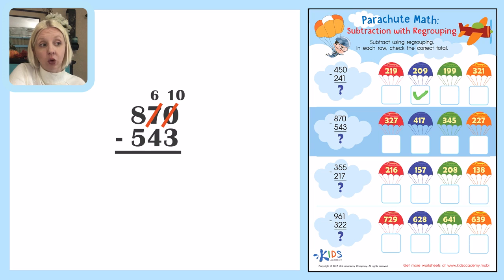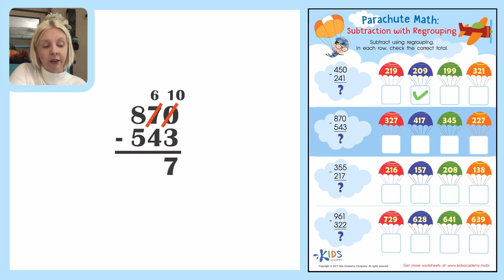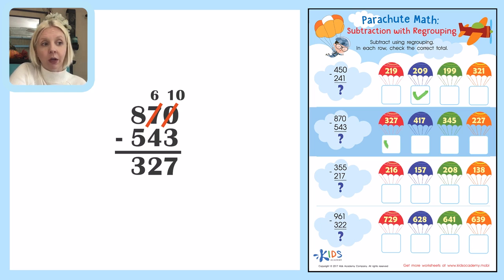So I'm going to turn that seven into a six — it's ten less because it's the tens place. So now I'm going to take ten minus three which is seven, then six minus four which is two, and eight minus five which is going to be three. So the answer is 327, and I'm going to find it and put a check next to that one.